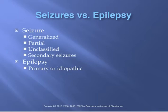Seizures versus epilepsy: there are different types of seizures, and people can have them for many different reasons. Seizures result from abnormal electrical activity in the brain. Triggers include electrolyte imbalances, infections, and high fevers. Epilepsy is a neurological disorder marked by sudden recurrent episodes of seizure activity, usually accompanied by sensory disturbances and loss of consciousness.